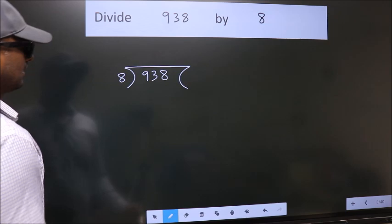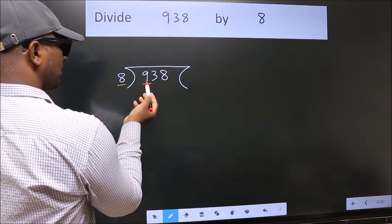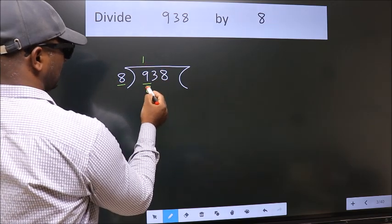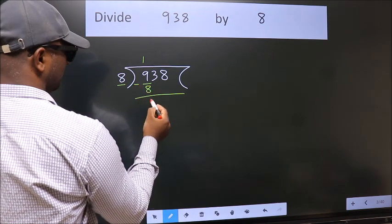Next. Here we have 9. Here 8. A number close to 9 in the 8 table is 8 once 8. Now we should subtract. We get 1.